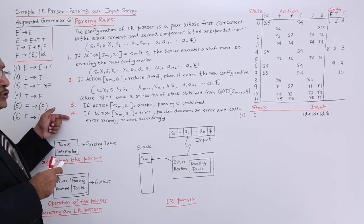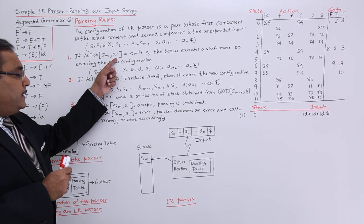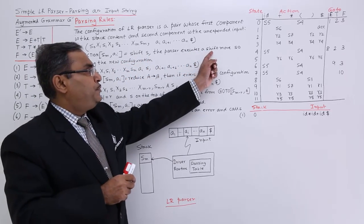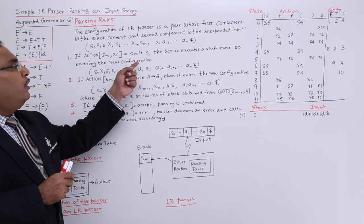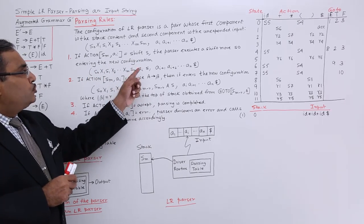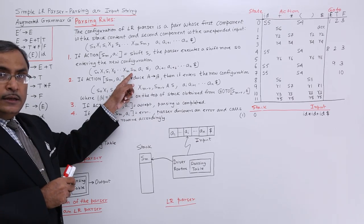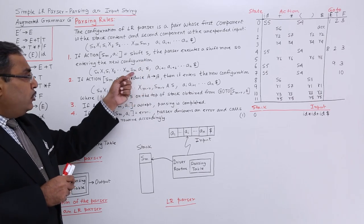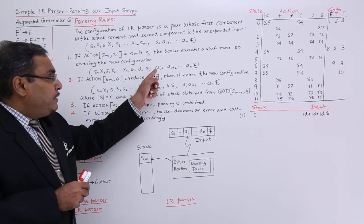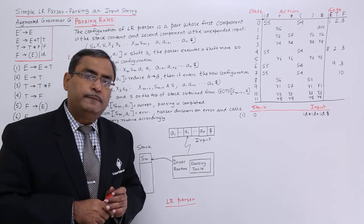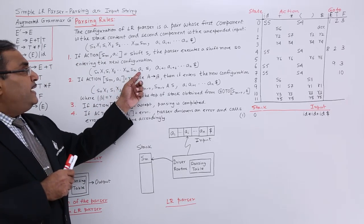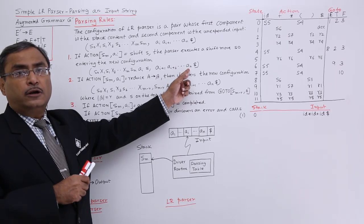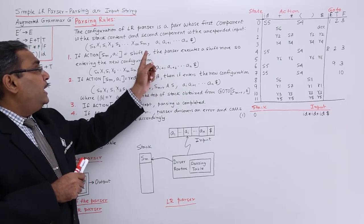There are 4 rules. Rule number 1: if action[sm, ai] is 'shift s', the parser executes a shift move, entering a new configuration. The current state sm remains, ai comes in and shift s is pushed onto the stack. Ai is removed from the unexpended input because it has been shifted.